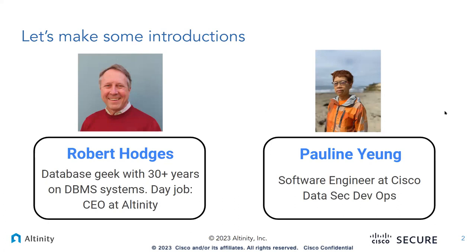This is Pauline Young. I'm a software engineer at Cisco. I've been doing data engineering for the past decade with Cisco. And my name is Robert Hodges. I've been working on database systems for 40 years — most recently ClickHouse, but systems going back to pre-relational databases like M204. I've been involved in Kubernetes security and other topics as well. My day job is CEO at Altinity. Let's jump in.